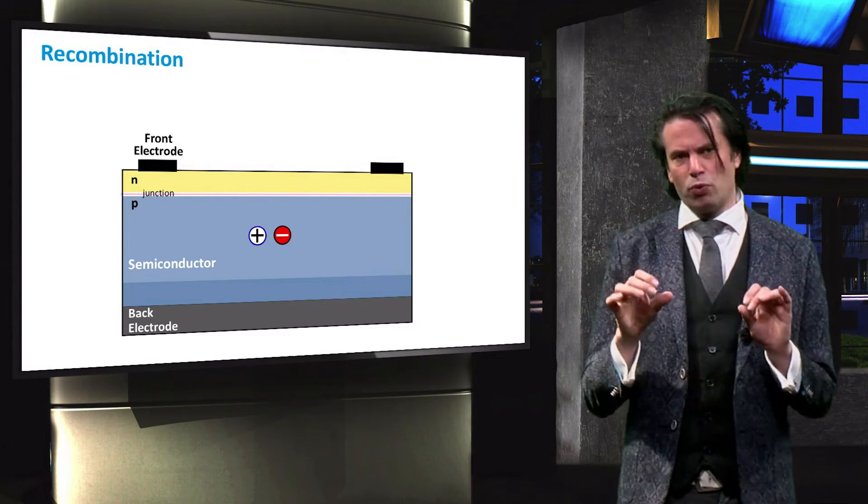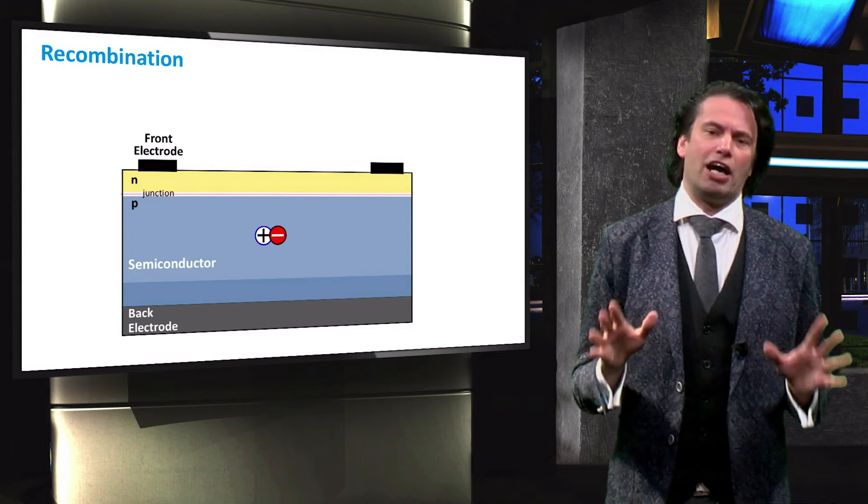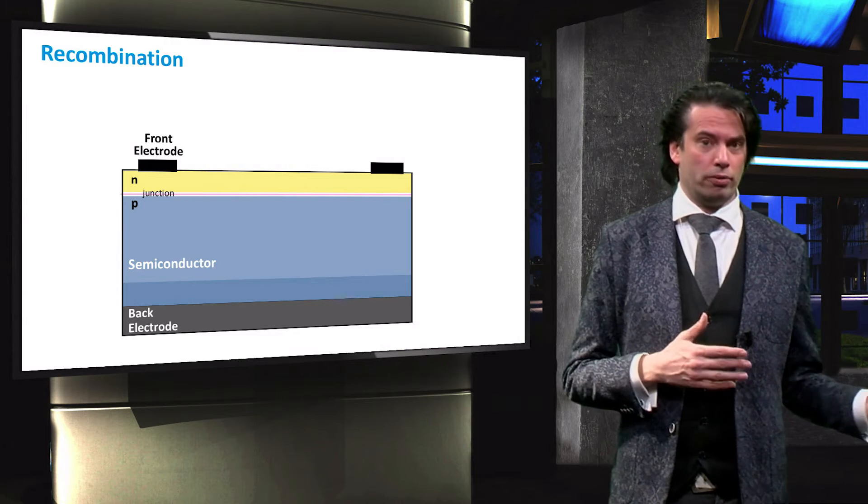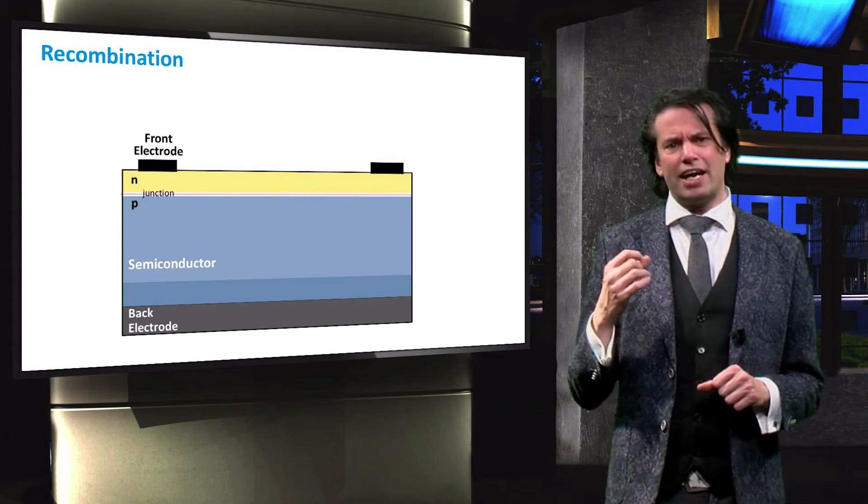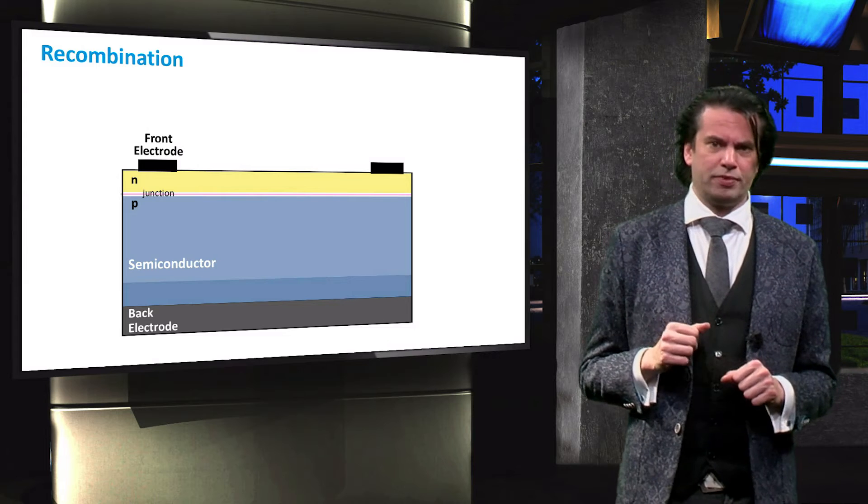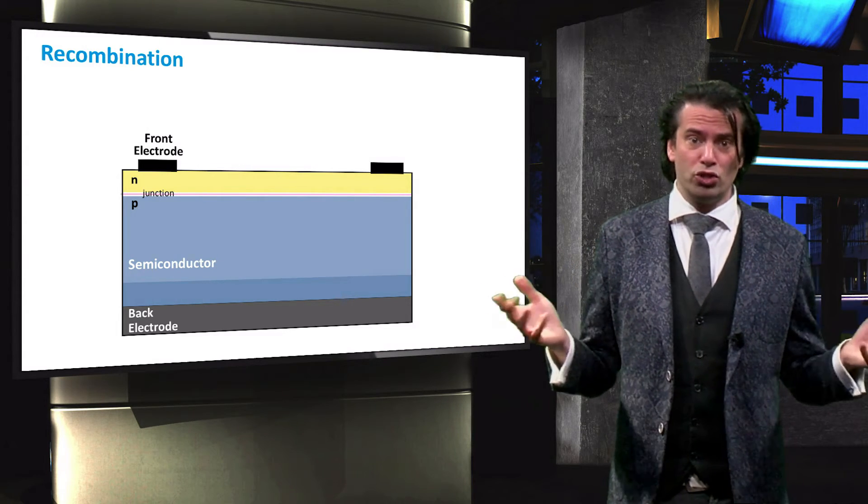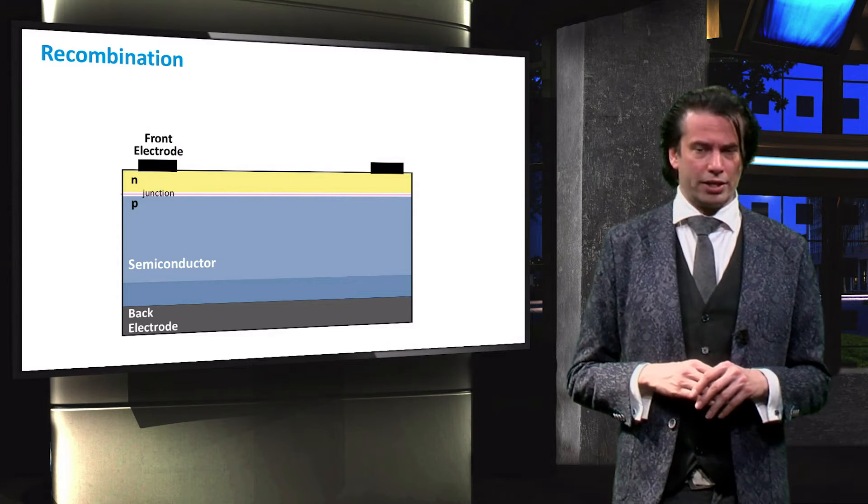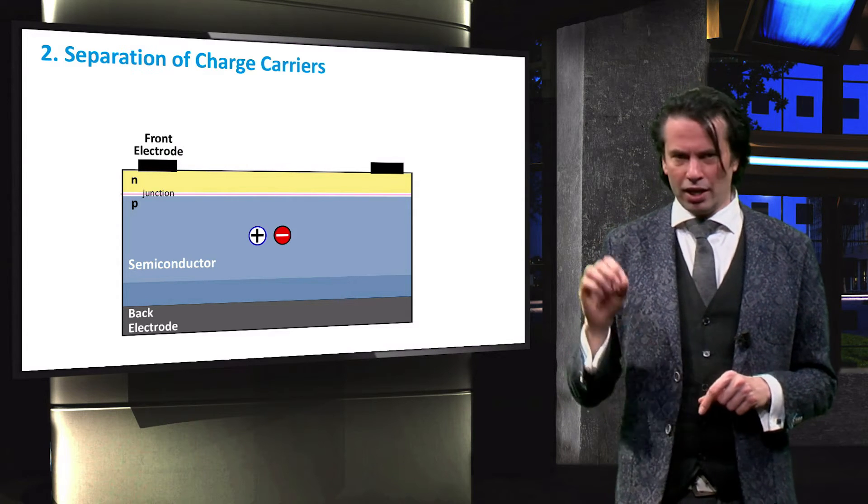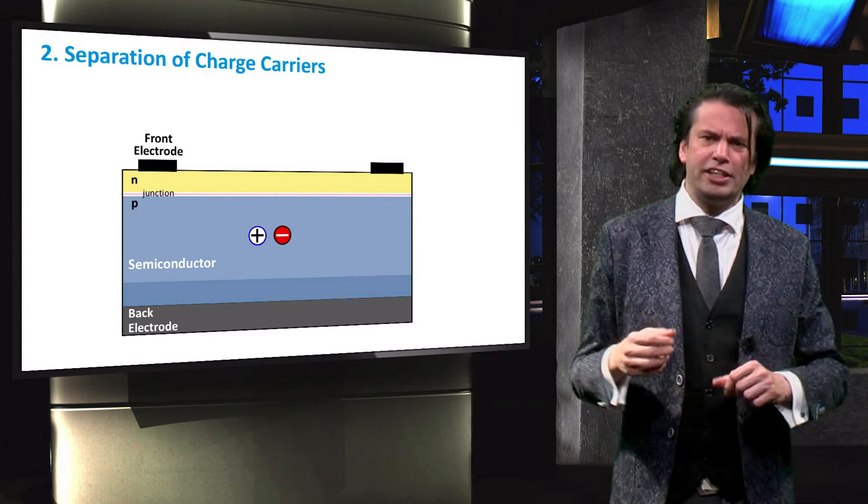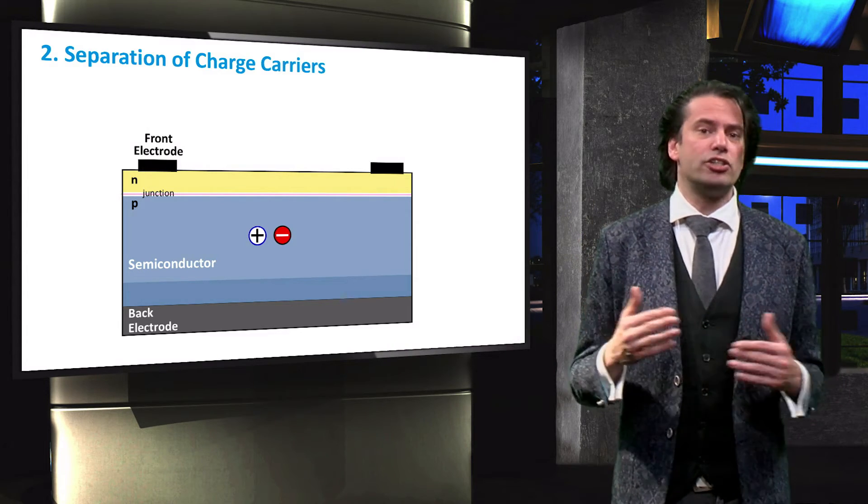The electron-hole pair will only survive for a certain lifetime. After some time, recombination may occur. This means that the electron will fall back to its initial state. If this happens, that absorbed energy is essentially lost and cannot be converted into electrical energy. Therefore, in order to really generate electricity, we have to separate these charge carriers.